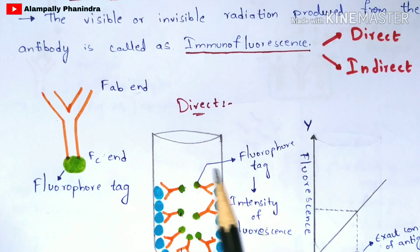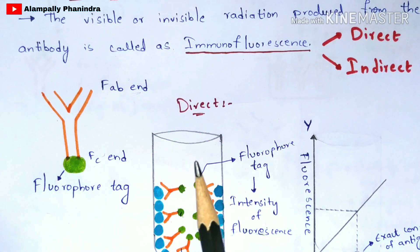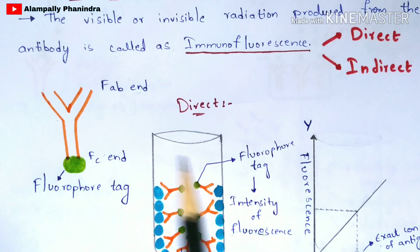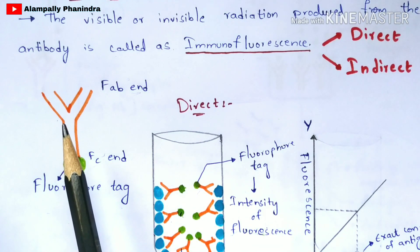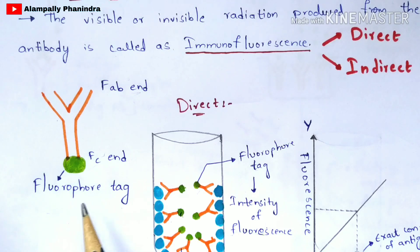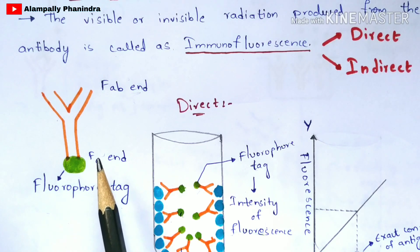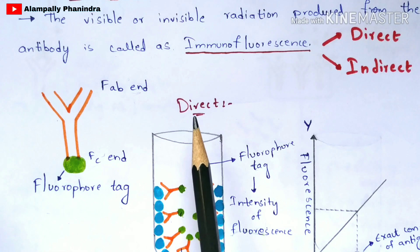Before going into the procedure, firstly you are going to take the antibody solution and to those antibodies you are going to add the fluorophore tag at the FC end. Now the actual procedure will start.